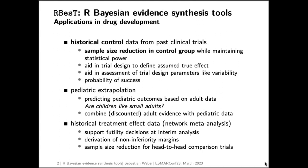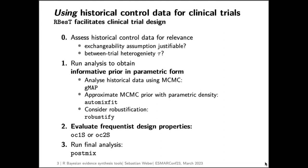The workflow we have in mind when using RBesT for designing a new study is: first — which would be outside of the domain of the software — you assess historical control data for relevance for your new study. You look at the historical data, assess its exchangeability assumption from a model perspective, asking questions around population similarity of the historical data in terms of enrollment criteria and similar considerations. This is then translated into your assumptions on the between-trial heterogeneity of the model.